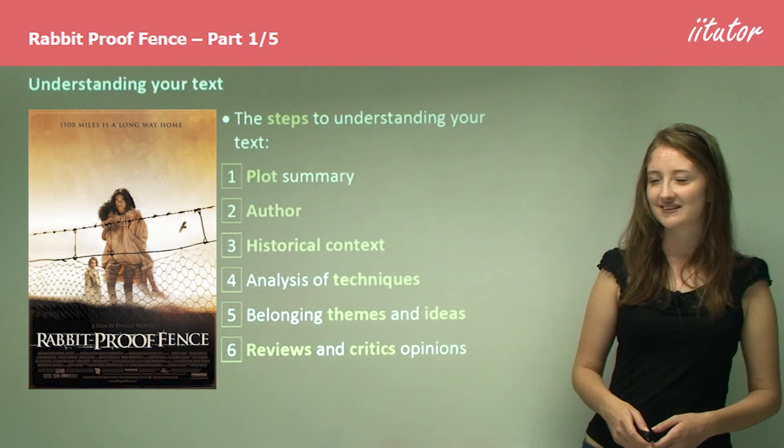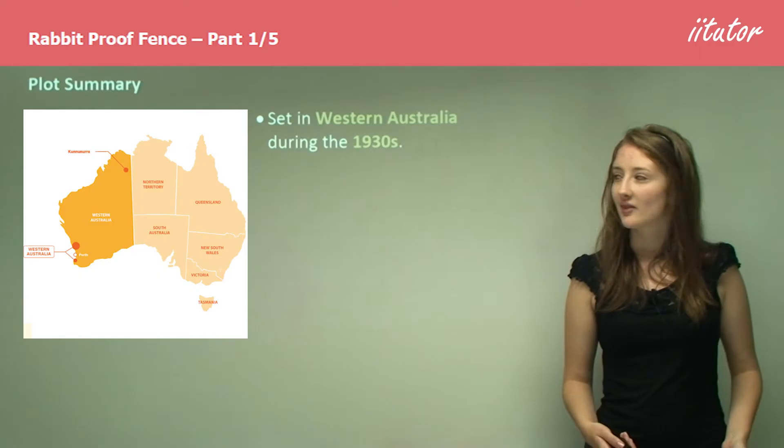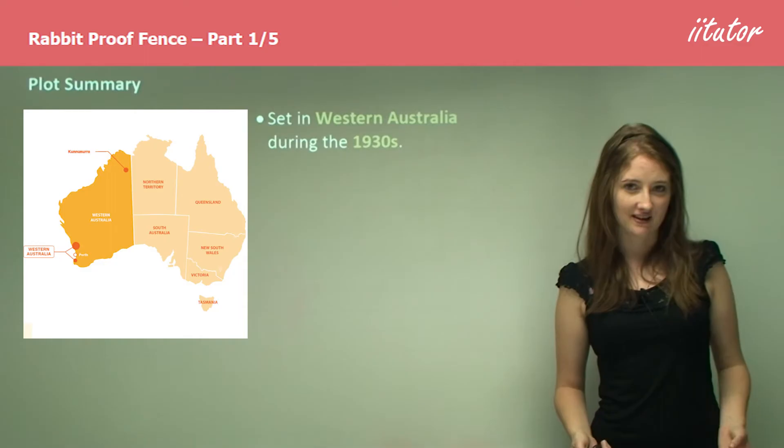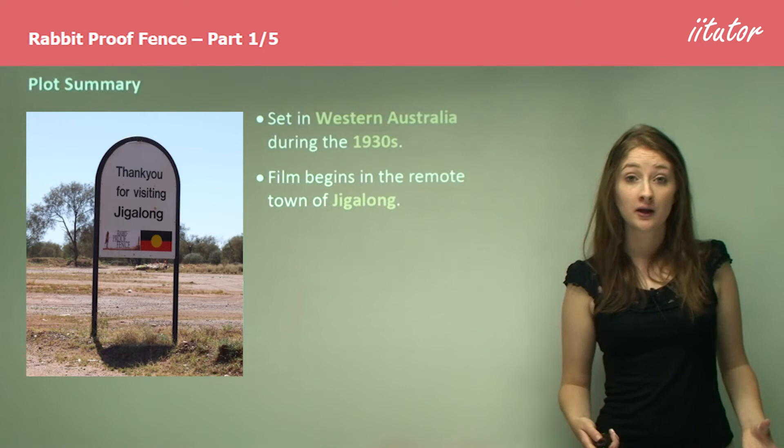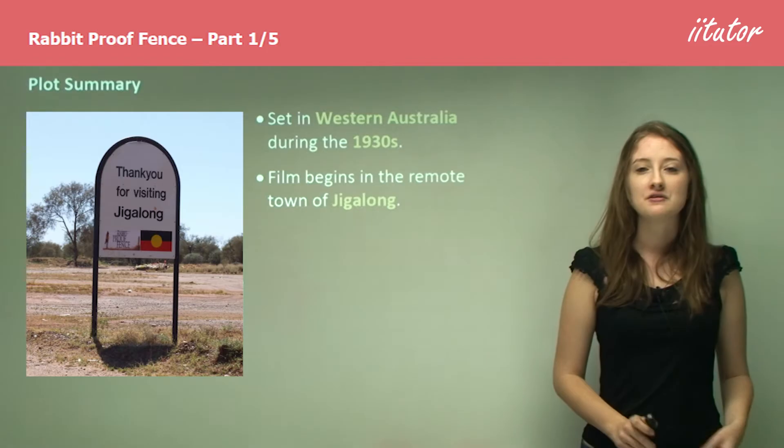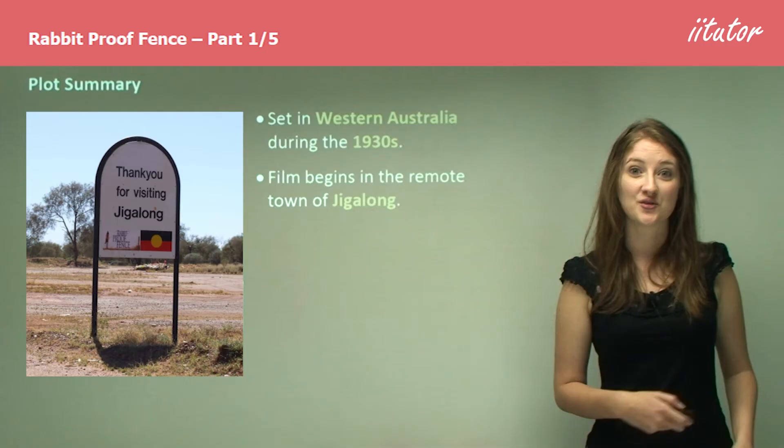Let's start by looking at a plot summary of this film. The Rabbit Proof Fence is set in Western Australia during the 1930s. The film begins in the remote town of Jigalong. The entire film is not set in this town, however this is where you get the introduction to the scene and where you really start to understand the struggles of the characters who are going to be introduced.